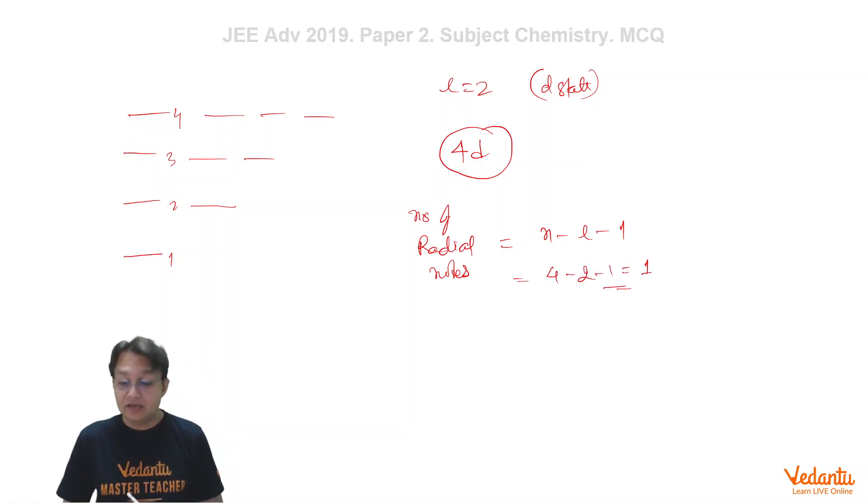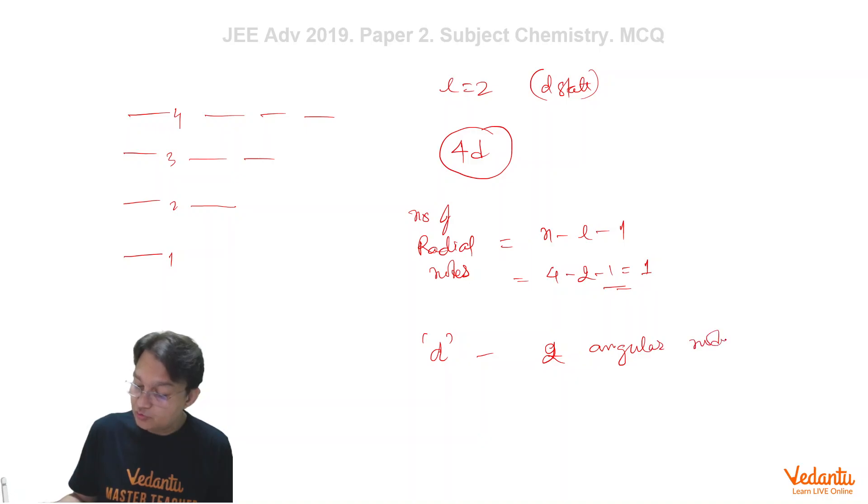And since it is d orbital, it has two angular nodes. It has two angular nodes, because number of angular nodes is given by formula: number of angular nodes is equals to simply equal to L.